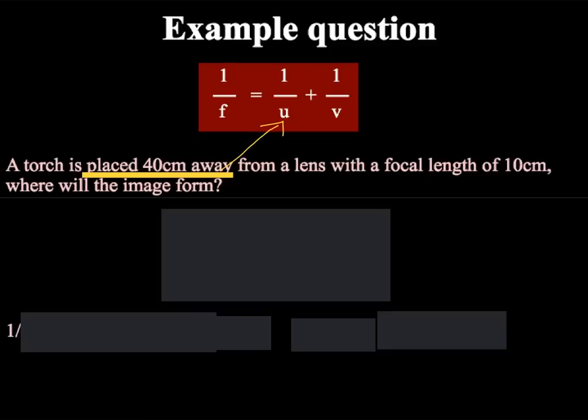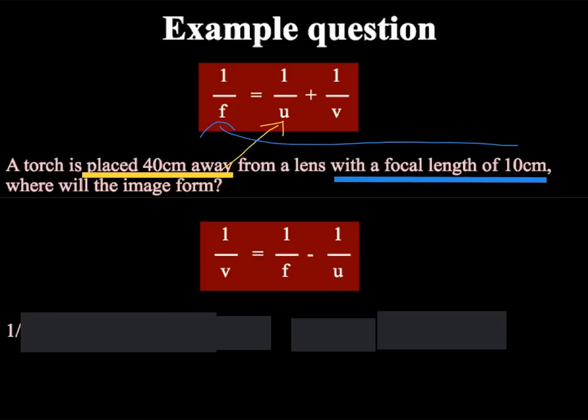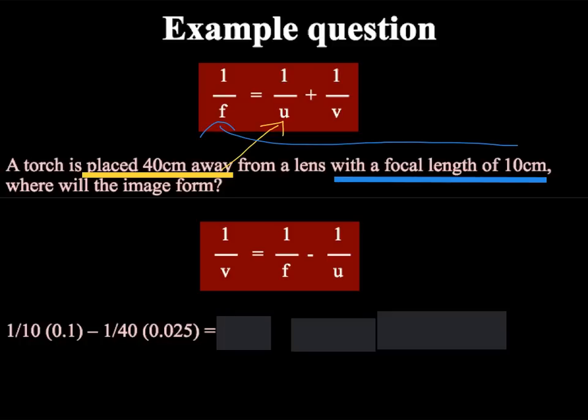The second thing in the question tells us the focal length is 10 centimetres, as such we now know that 10 must equal f. So now we have the first parts of our question. We do however need to make 1 over v the subject of our equation. In order to do this we must rearrange the equation and therefore make 1 over v equals 1 over f minus 1 over u. This has been done by taking 1 over u away from both sides. If we now plug in our numbers this gives us 1 divided by 10 which is equal to 0.1, take 1 divided by 40 which is equal to 0.025, giving us an answer of 0.075.